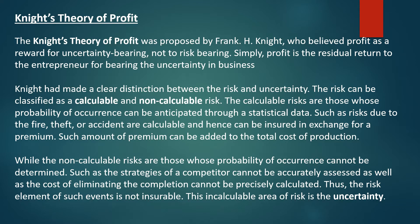Risk can be classified as calculable and non-calculable risk. Calculable risks are those whose probability of occurrence can be estimated through statistical data, such as risk due to fire, theft, or accident — these are calculable and hence can be insured in exchange for a premium, which can be added to the total cost of production. Non-calculable risks are those whose probability of occurrence cannot be determined, such as a competitor's strategy or the cost of eliminating competition. The risk element of such events is non-insurable. This incalculable area of risk is what constitutes uncertainty.